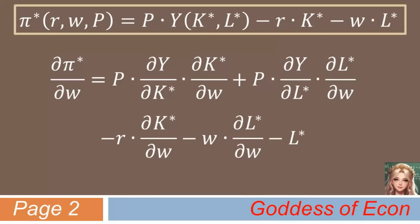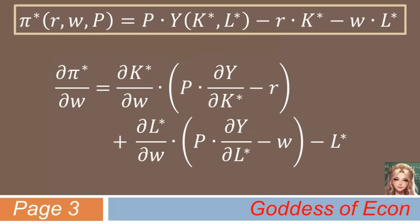Next, let's factor out the partial derivative of k and that of l, as we did before. Then we have the following. Again, the expressions in the parentheses should look familiar to you. They are the same as the first order conditions that we have derived before to find an interior optimum.